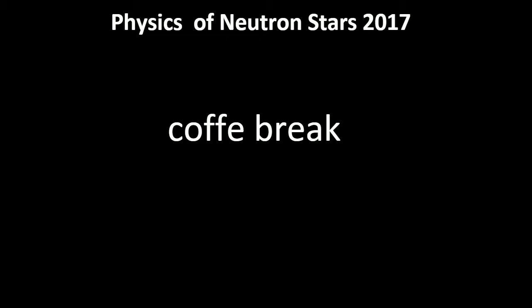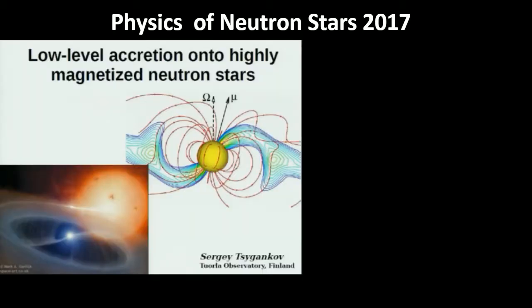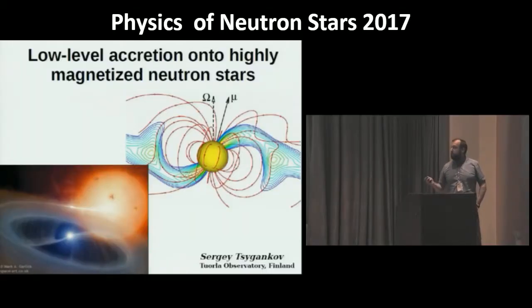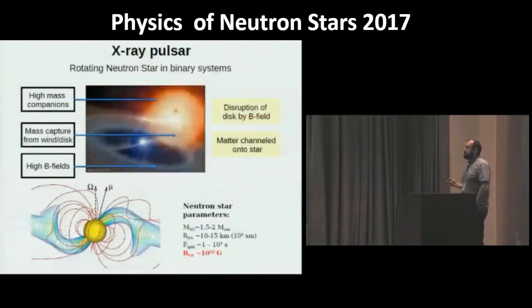Our first speaker is Sergey Cegankov, who is going to be talking about low-level accretion. Thank you. I have quite a general talk title because I'm going to discuss a few interesting observational effects appearing in the case of very low accretion onto highly magnetized neutron stars — we are studying X-ray pulsars.